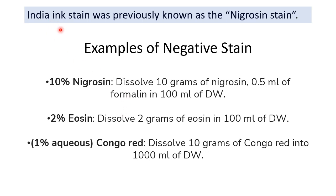India ink was previously known as nigrosin stain. Other examples of dyes used in negative staining include 10% nigrosin which is commonly used, 2% eosin, and 1% aqueous congo red.